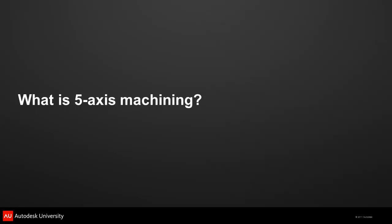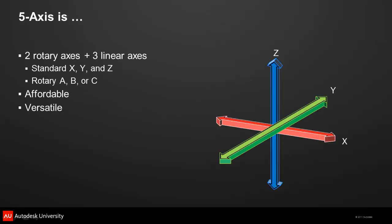Before I get into CNC programming details, let's start by taking a look at how 5-axis machines work. If you're already familiar with 5-axis, please stick with me for a few minutes. Standard machines can only move in X, Y, and Z. 5-axis machines have two additional axes of rotation. Most machine tool builders identify their rotary axes according to the ISO standard.